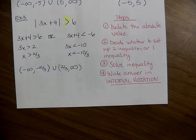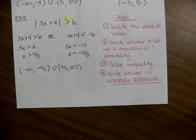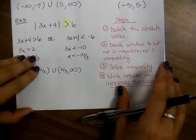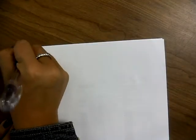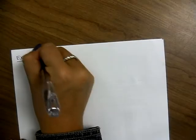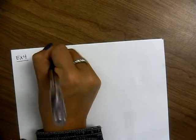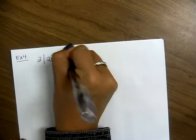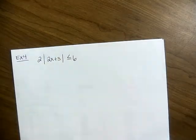Any questions on example 3 or any of the steps? Let's try the other case: 2 times the absolute value of 2x plus 3 is less than or equal to 6.